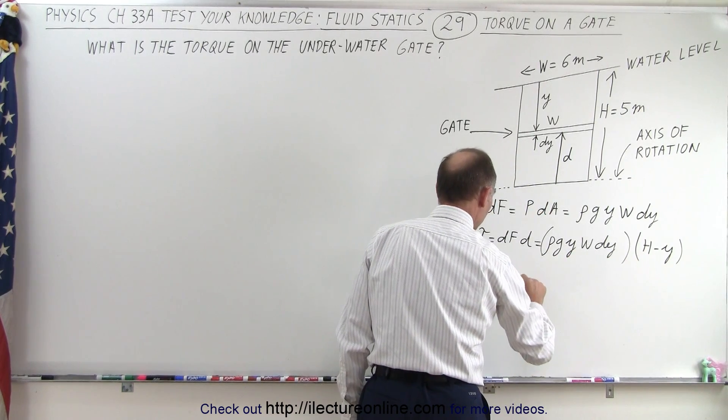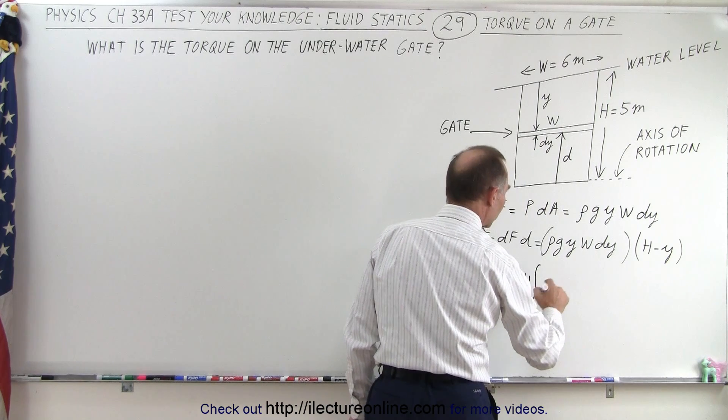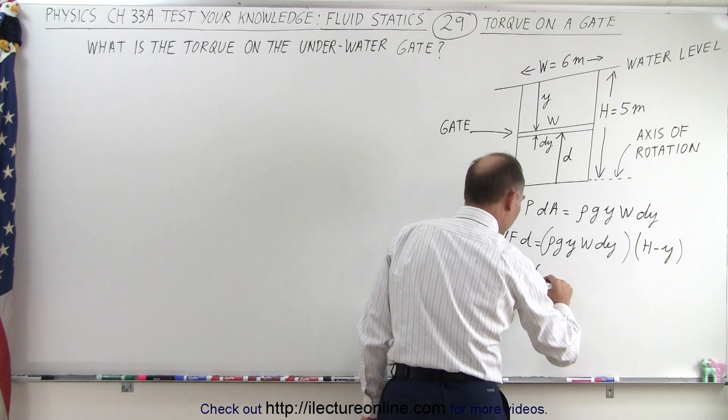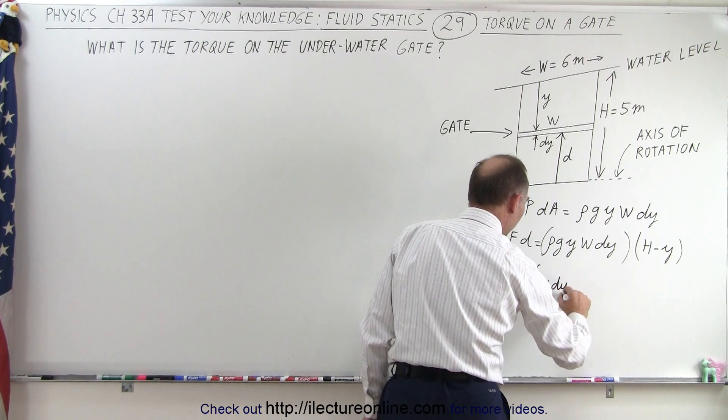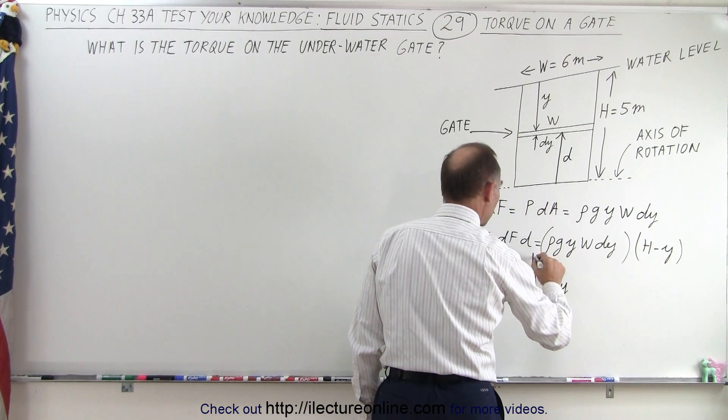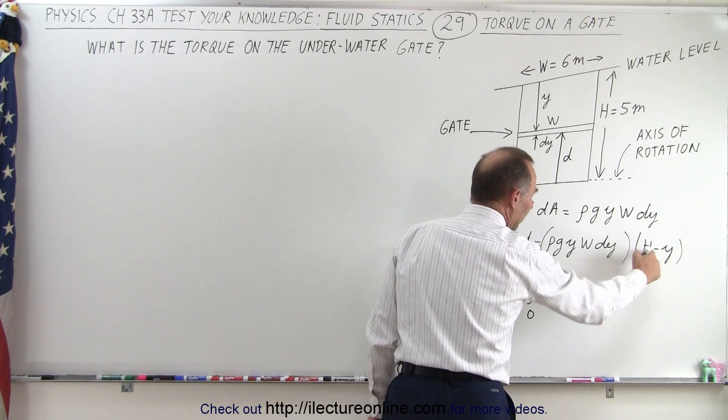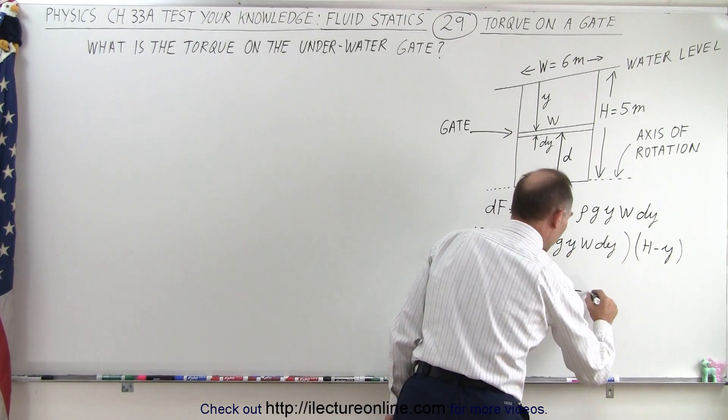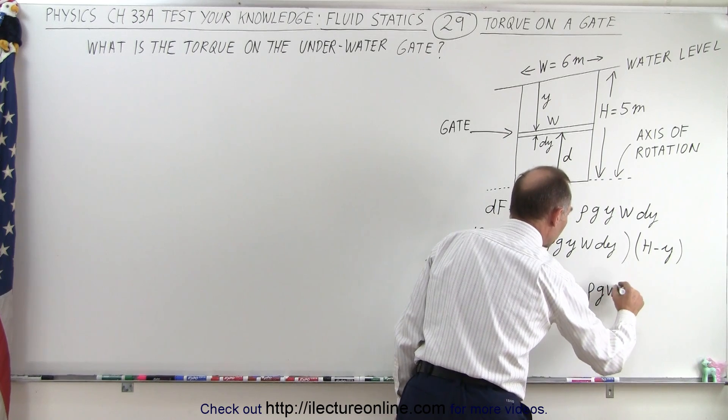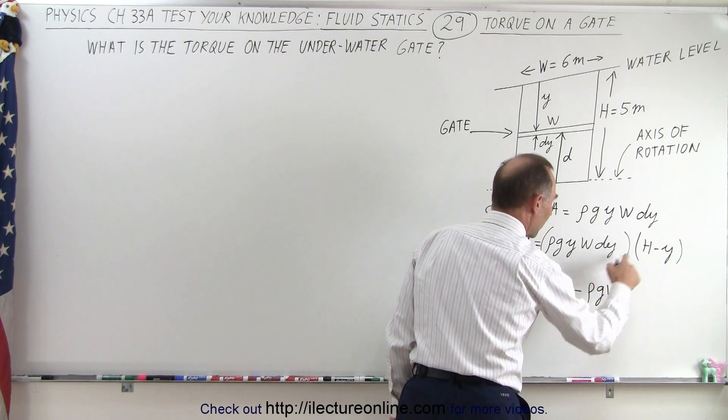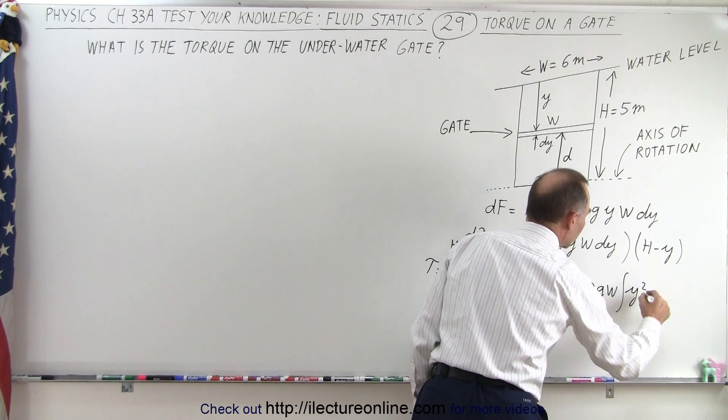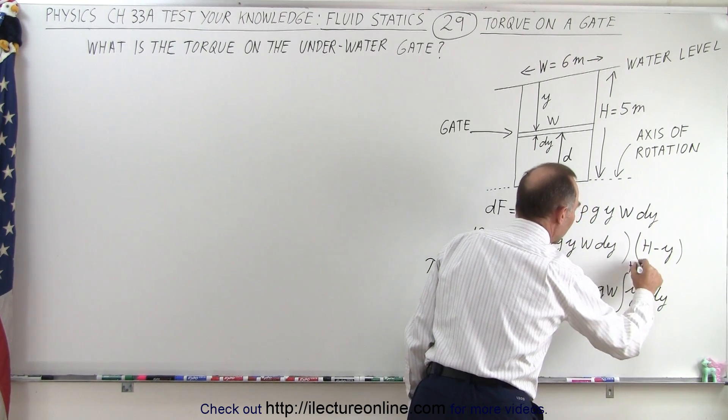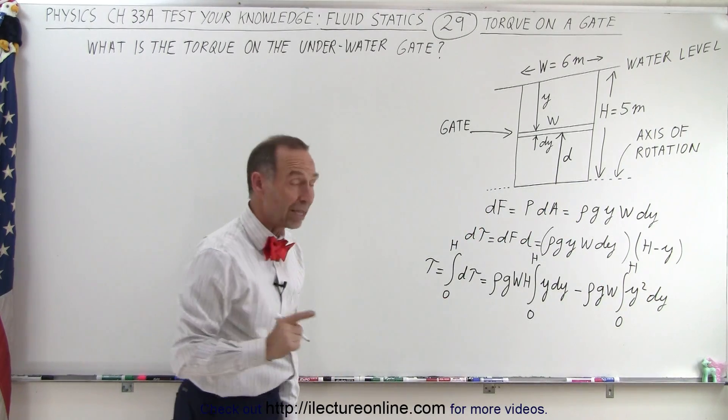The first integral we have ρGWH, so we have ρGWH times the integral of Y times dY, this goes from zero to H, minus because I have a minus here we have ρGW times the integral of Y times Y, we have the minus so we have Y squared dY and we go from Y equals zero to H. So we have two integrals to take care of to find the total torque.